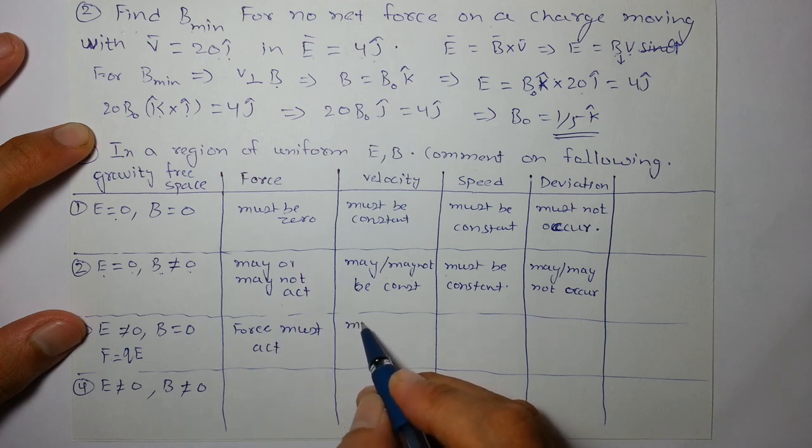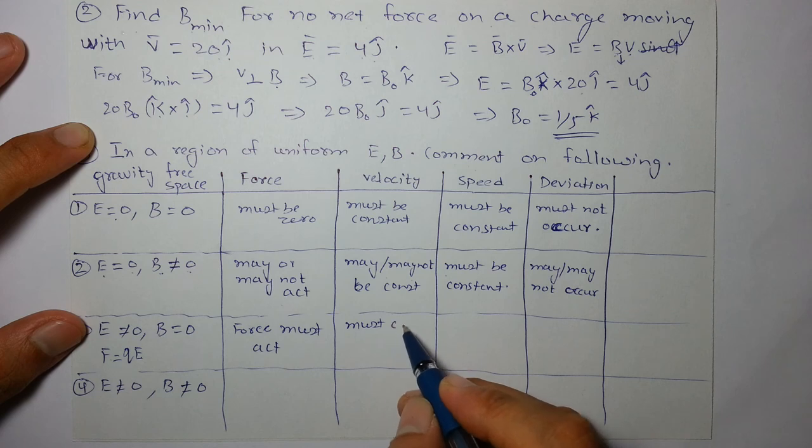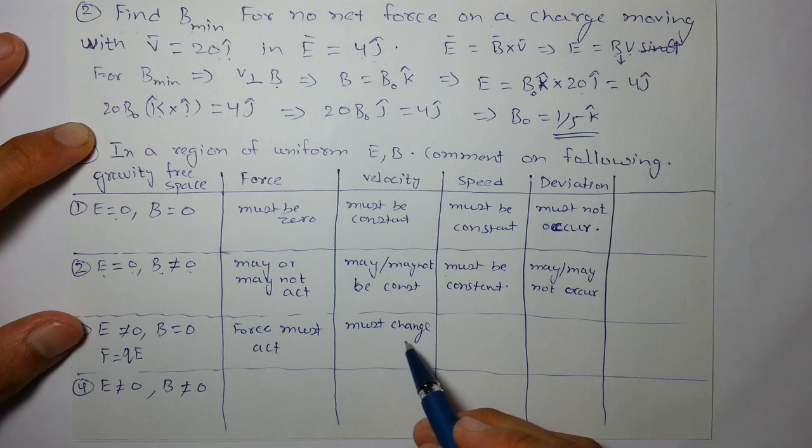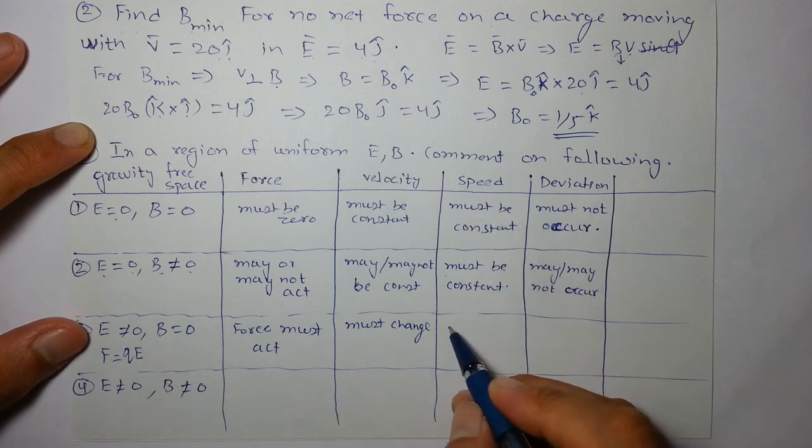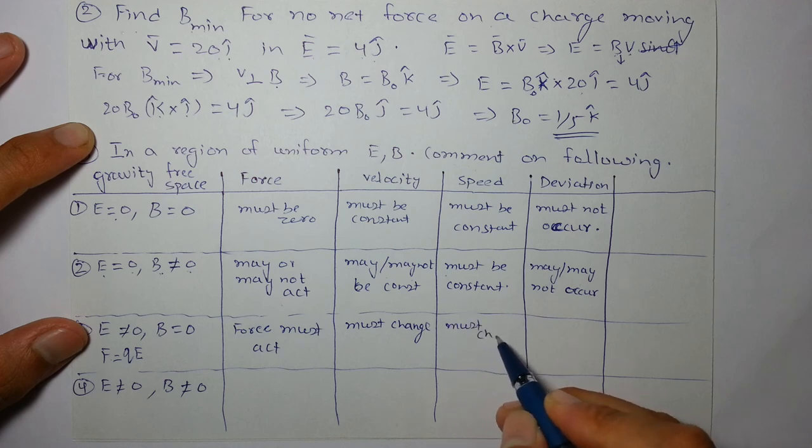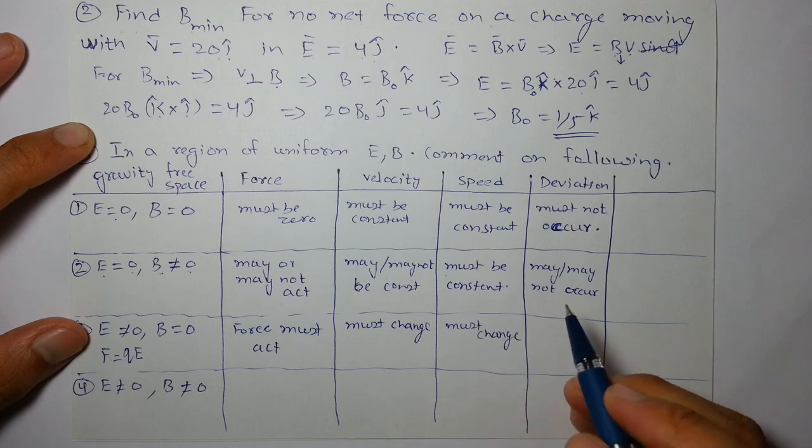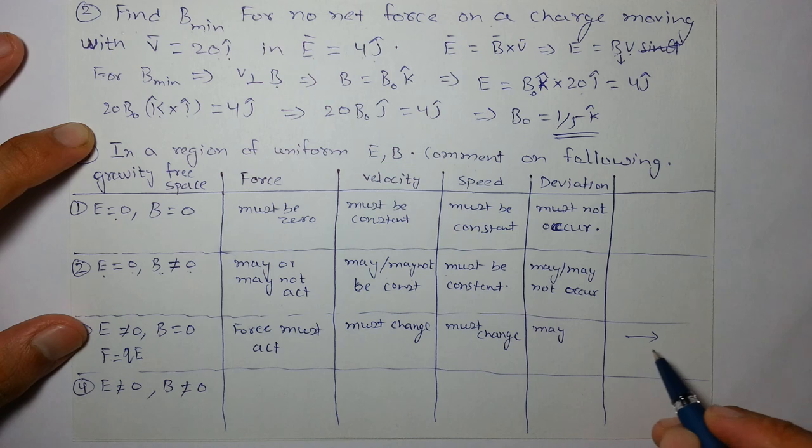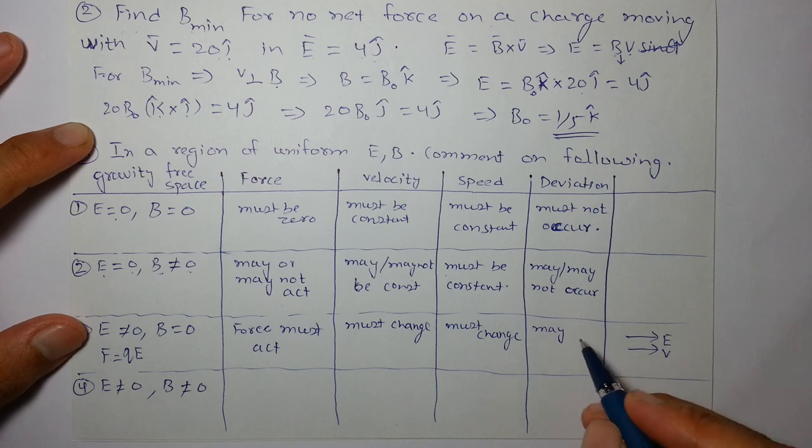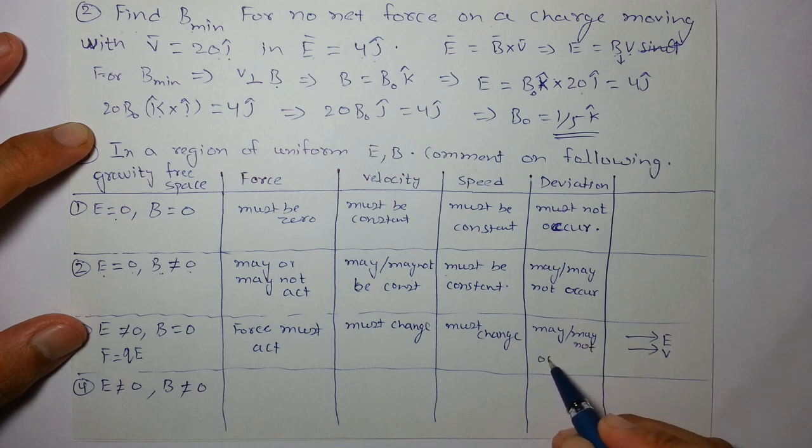Acceleration must be, sorry velocity must change. Either in direction or in magnitude, it will change in magnitude in electric field. Speed must change, speed must change. Deviation may or may not, because it's possible you have electric field in this direction and if charge velocity is in this same direction then there will be no deviation but it will speed up. So may or may not deviate or occur.